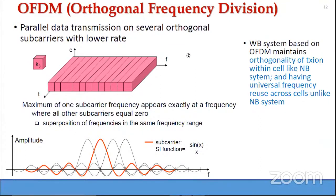We make use of a number of orthogonal sub-carriers. Looking at the diagram, the red one is one sub-carrier and three others are shown. The peak point of one sub-carrier appears at a frequency where all other sub-carriers are contributing zero.